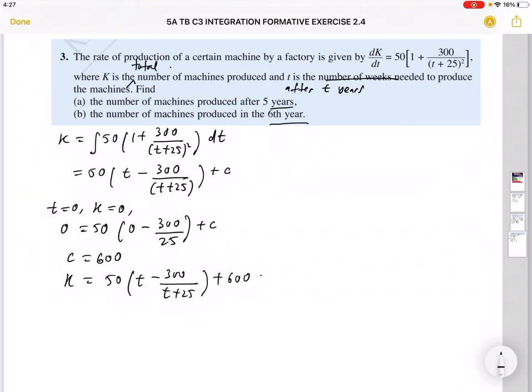300 divided by 25 times 50—there's a negative here—you bring over, c should be 600. So my function k is now 50(t - 300/(t + 25)) plus 600. In order to match the answer given in the textbook, k represents the total machines produced. If you look at part a, it is the number of machines produced after 5 years. So we're talking about total after 5 years is how many you have. So you sub t equals 5, so k is 50(5 - 300/(5 + 25)) plus 600. You can just write 30 plus 600. So use your calculator; you should get 350. So total 350 machines produced after five years.